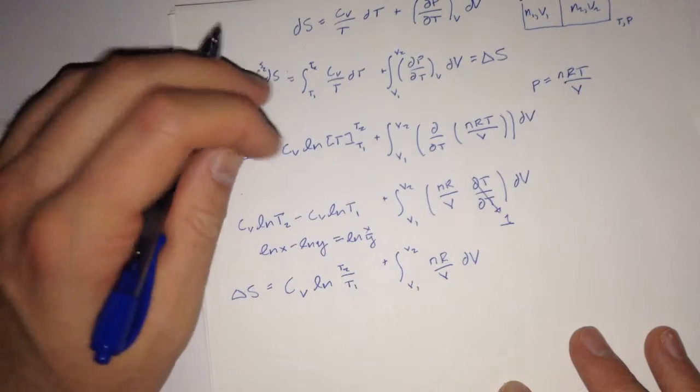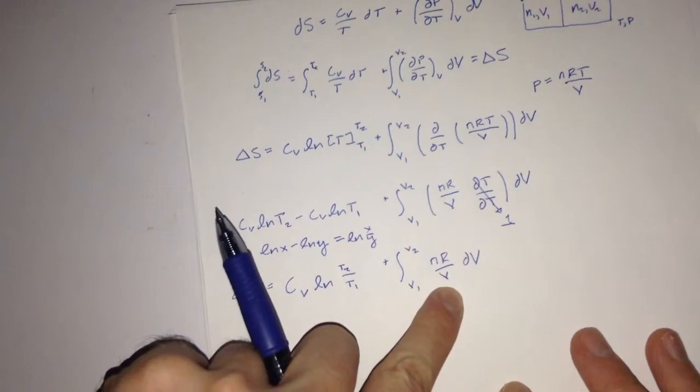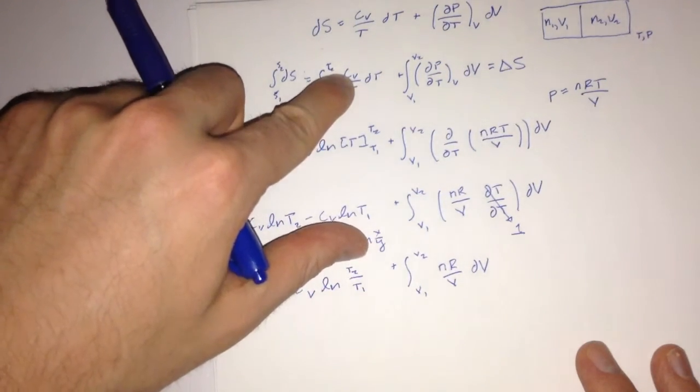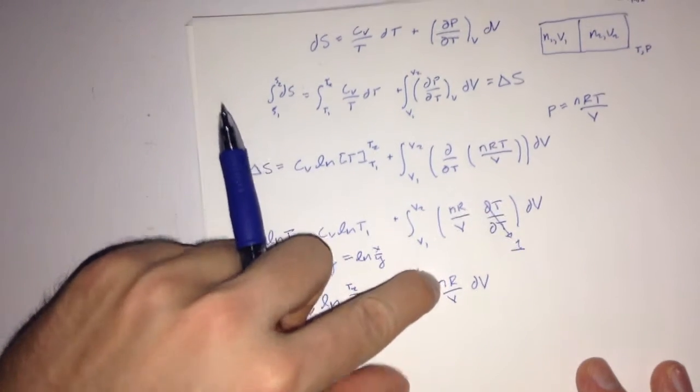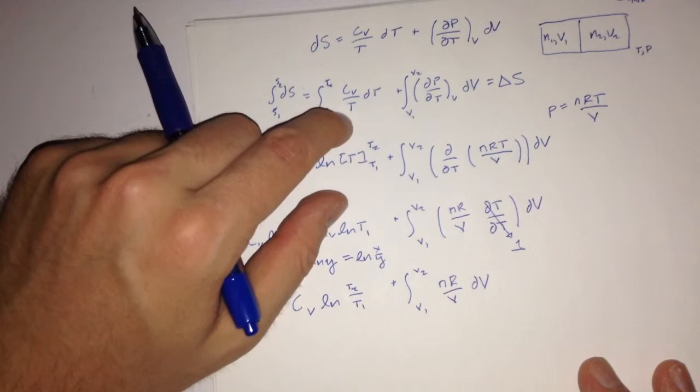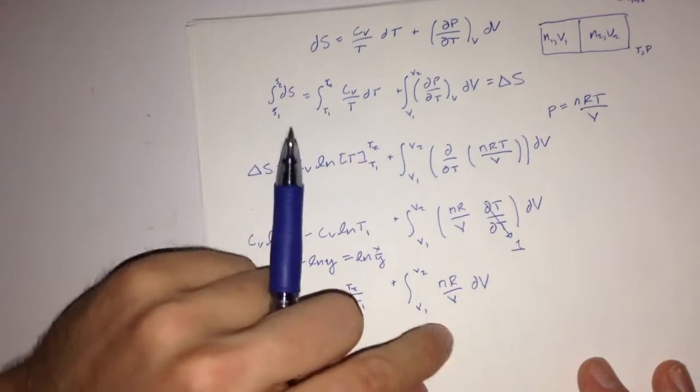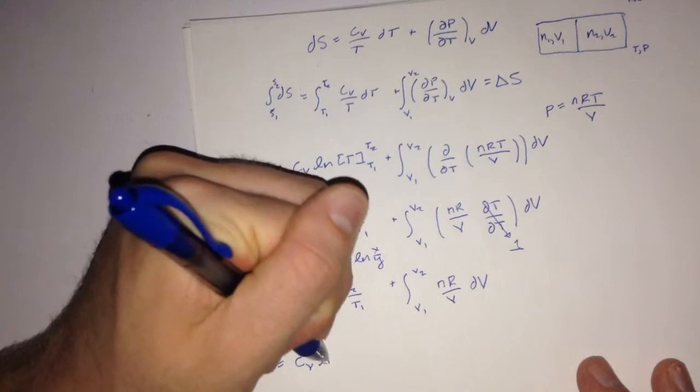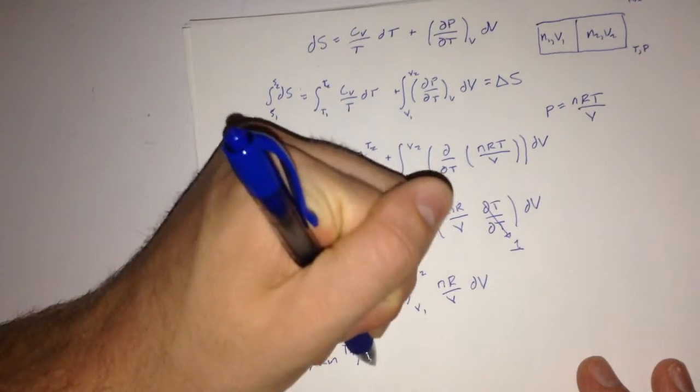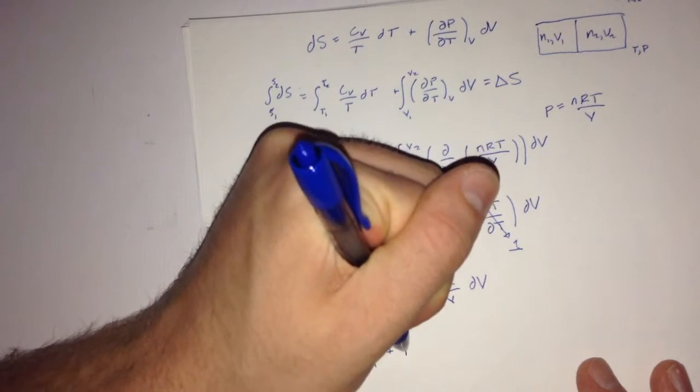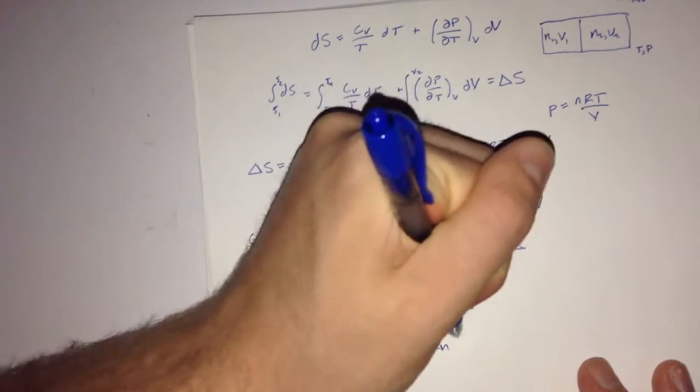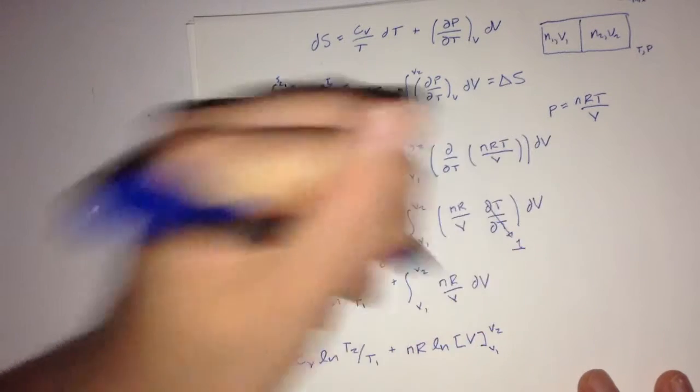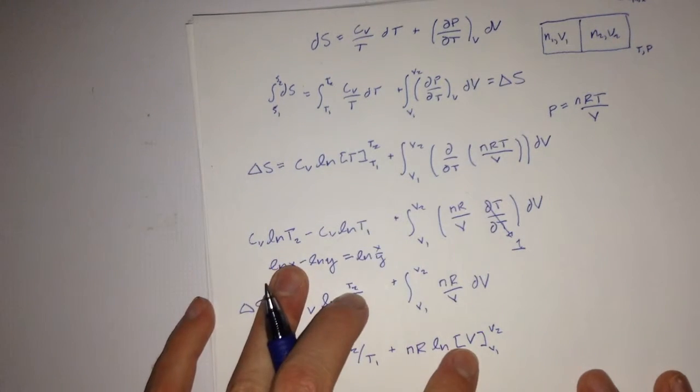And also similarly, we notice that this second part of the derivative is very similar to the first part, where we had cv as the constant right there. The same thing applies to the nR. And just as we are integrating t when it's a variable on the bottom, we can do the same for this.